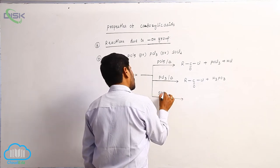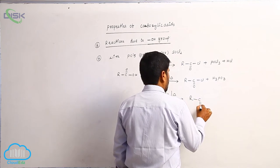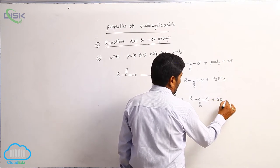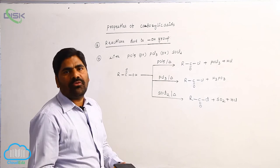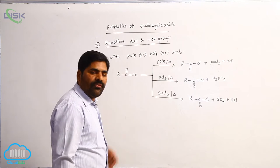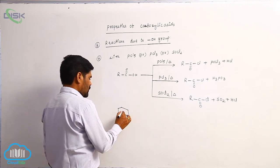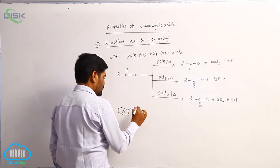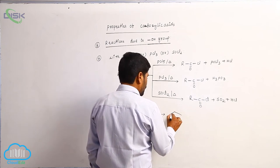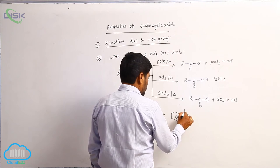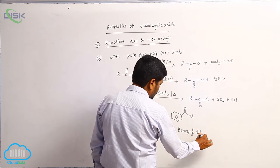When a carboxylic acid reacts with thionyl chloride (SOCl2), it forms acid chloride, plus sulfur dioxide gas and HCl gas. For example, benzoic acid reacted with thionyl chloride followed by heating forms benzoyl chloride.